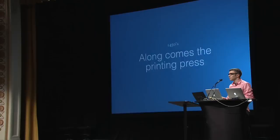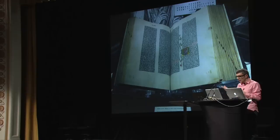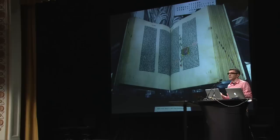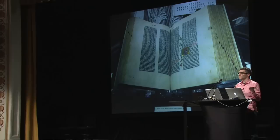The printing press changed things slowly. This is Gutenberg's Bible — it weighed 50 pounds and came in two volumes, 100 pounds total. It was essentially the equivalent of computers 50 years ago.